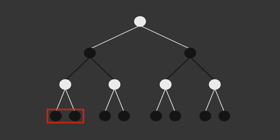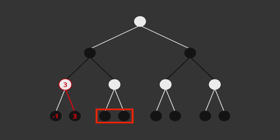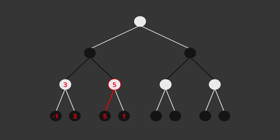Let's start with these two positions on the bottom left. Say we evaluate them and they come out as minus 1 and plus 3. Well, in the previous position it was white's turn to move, and since white will of course choose the move that leads to the highest evaluation, we can assign this position a value of 3 as well. Next let's evaluate these two positions and say we get plus 5 and plus 1. Once again, from the previous position white would pick the move leading to the highest evaluation, and so we can assign it a value of 5. We've now evaluated both the positions stemming from this position, where it's black's turn to move. Black will choose the move that leads to the lowest evaluation, and so we can assign this position a value of 3.